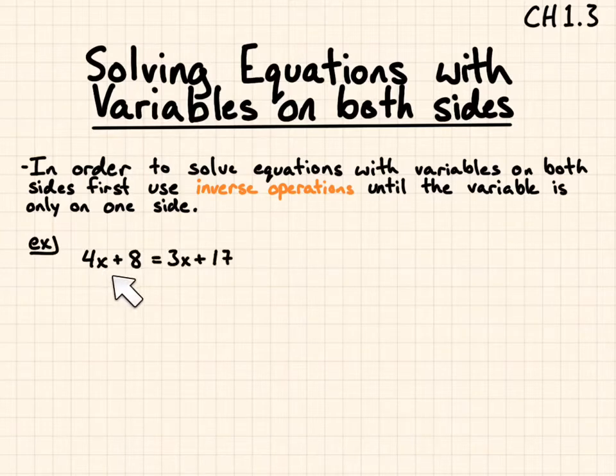Example, I have 4x plus 8 equals 3x plus 17. I want to get rid of the variable on one side, so I have 3x. My suggestion is to start with the variable with the lowest coefficient. 3 is lower than 4, so I'm going to subtract 3x from both sides. I get 3x minus 3x goes to 0, and I did remove that term then. So I only have 1x plus 8 equals 17.